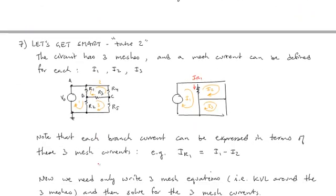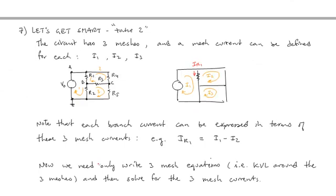All right. So now let's look at getting smart again. And this is a different approach now. Instead of looking at the node voltages, let's look at the mesh current. So the circuit has three meshes. And a mesh current can be defined for each, as we'll call it, I1, I2, and I3. So this guy right here is I1. I1, I2, I3.